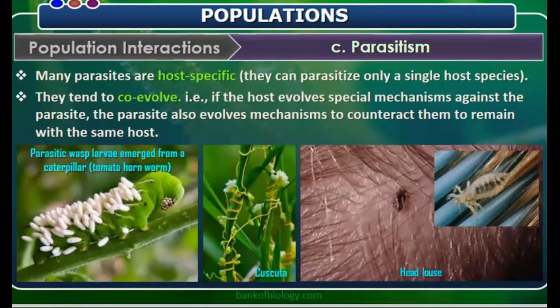Hello students, welcome to Easy Biology Tutorials. In the last class we basically discussed about species competition. Now we are going to start from the third kind of interaction, that is parasitism.